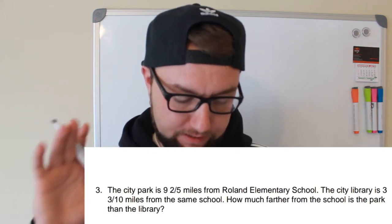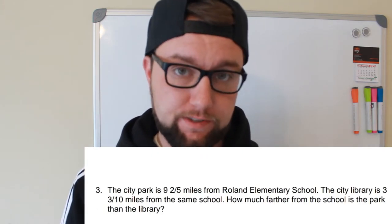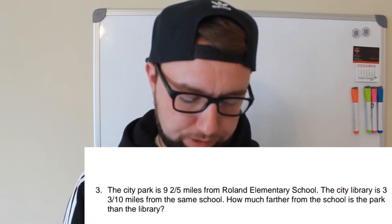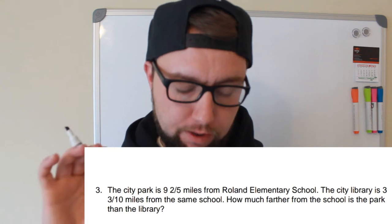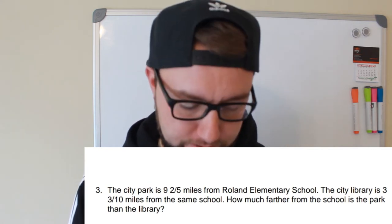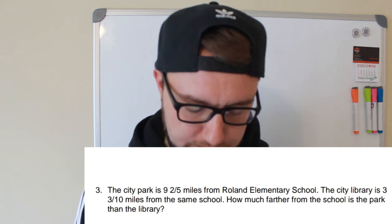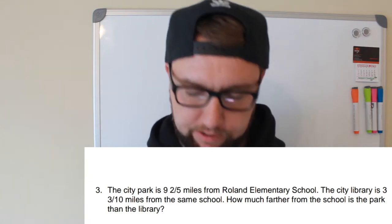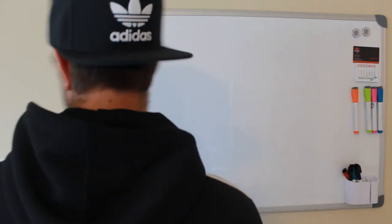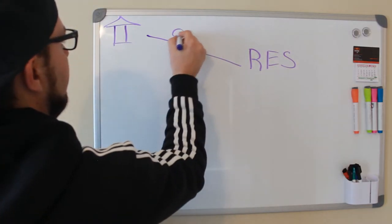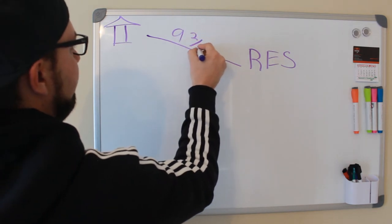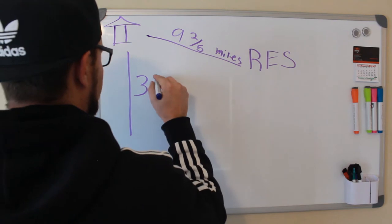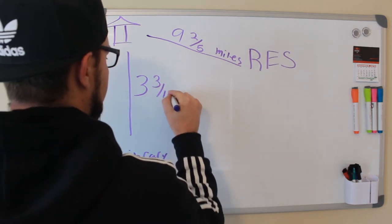The next problem says: the city park is 9 and 2/5 miles from Roland Elementary School. The city library is 3 and 3/10 miles from the same school. How much further from the school is the park than the library? What is happening in this question right now? So we have 9 and 2/5 for the park, and 3 and 3/10.